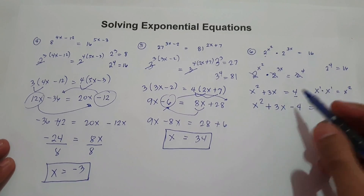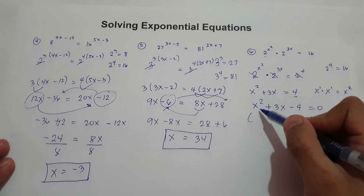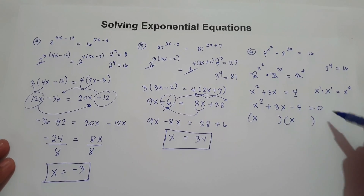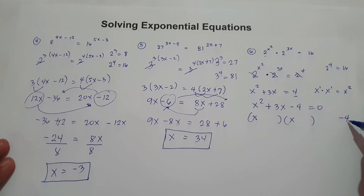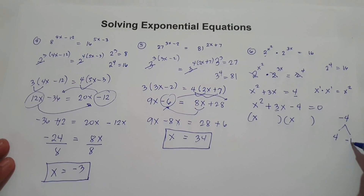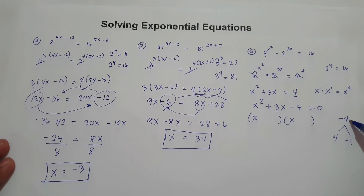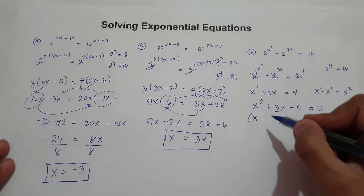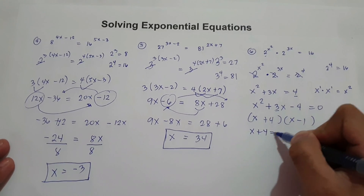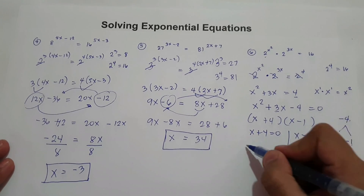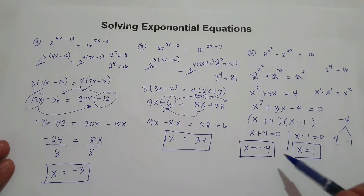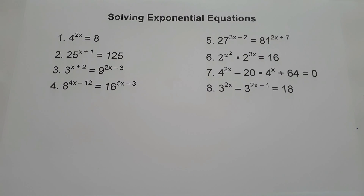Since we have a quadratic equation, we have 2 values of x. Factoring x squared plus 3x minus 4: we need two numbers that multiply to negative 4 and add to positive 3. That is 4 and negative 1. So we have x plus 4 equals 0 and x minus 1 equals 0. Therefore x equals negative 4 and x equals positive 1.